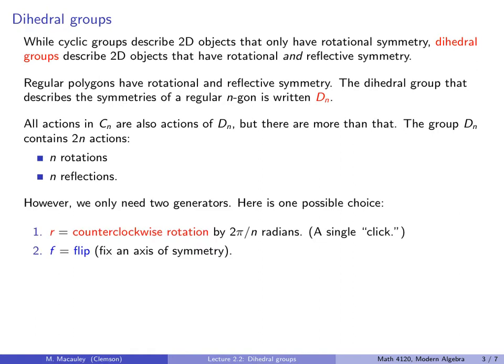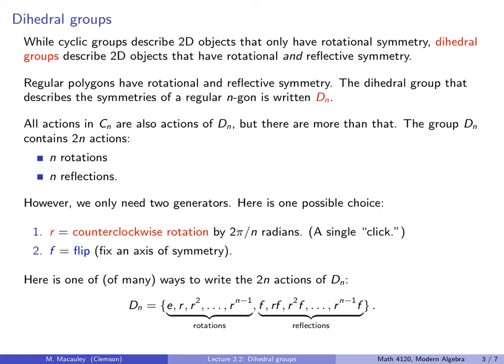However, we only actually need two generators. Here is one possible choice. Let R be a counterclockwise rotation by 2π over N radians — the same as we did with the cyclic group — and let F be a flip. Now fix an axis of symmetry; there are N to choose from if you have an N-gon, so just pick your favorite one. Here is one of many ways to write the 2N actions of D_N: the N rotations, and then the N reflections, which you can write as some power of R followed by F. You could also write these as F times some power of R, though that power of R might be different.